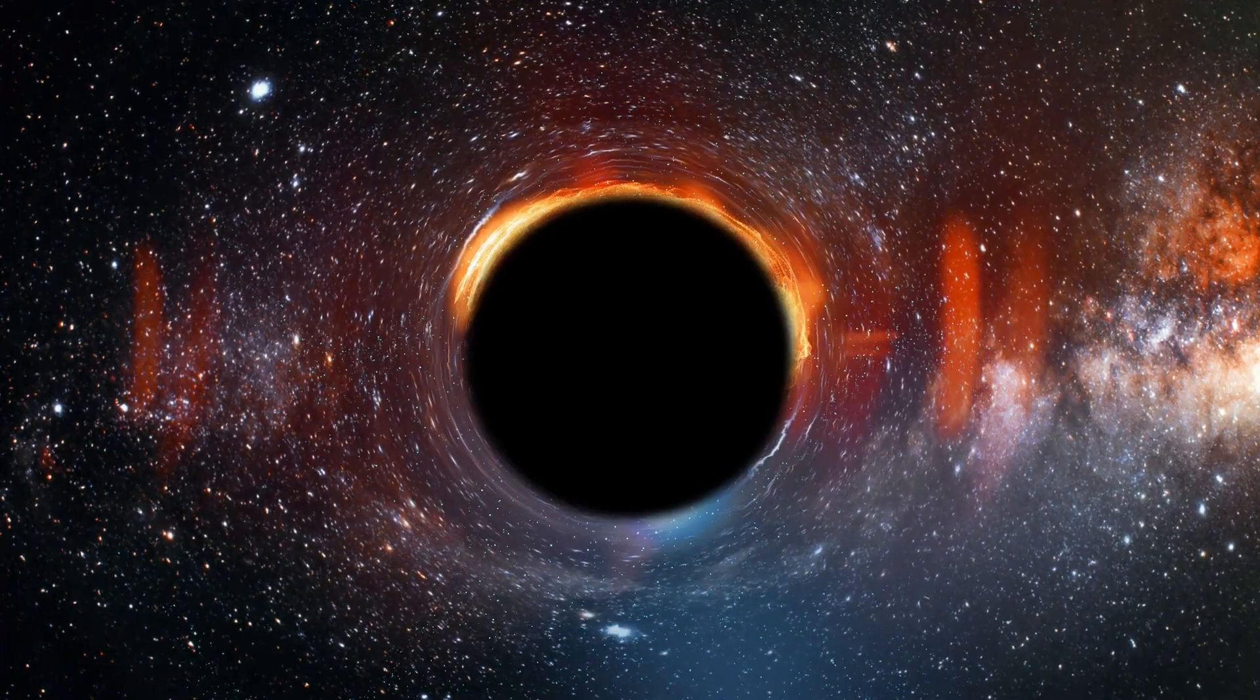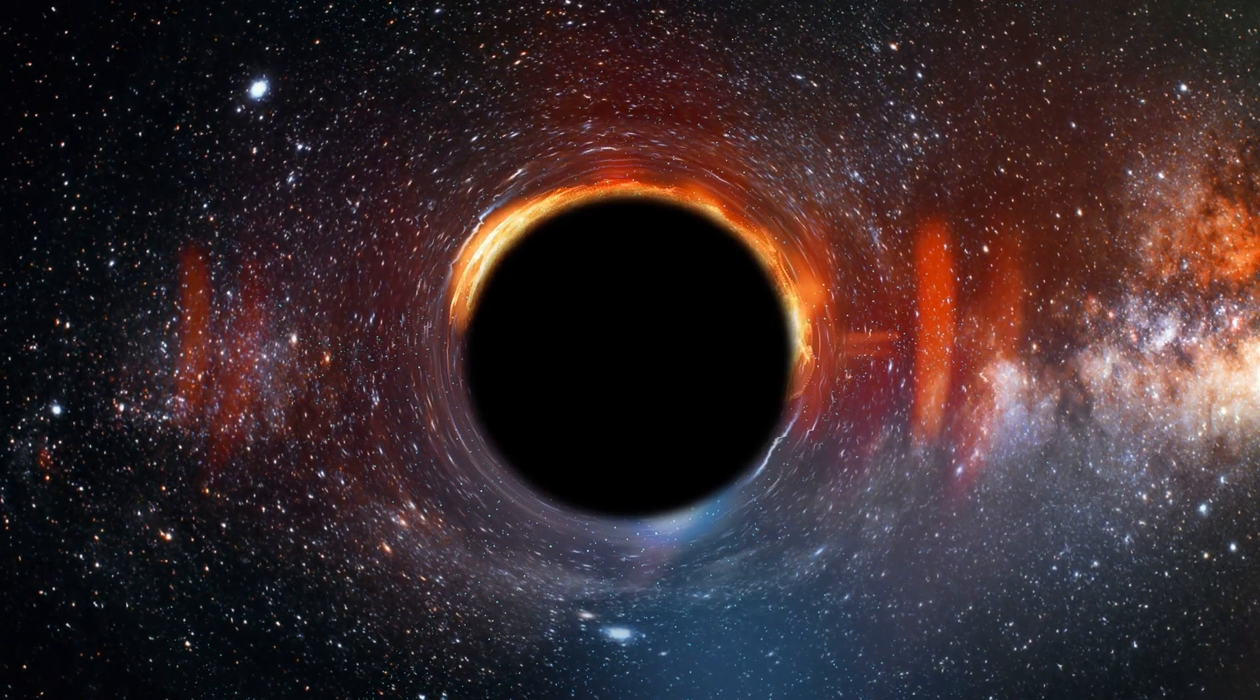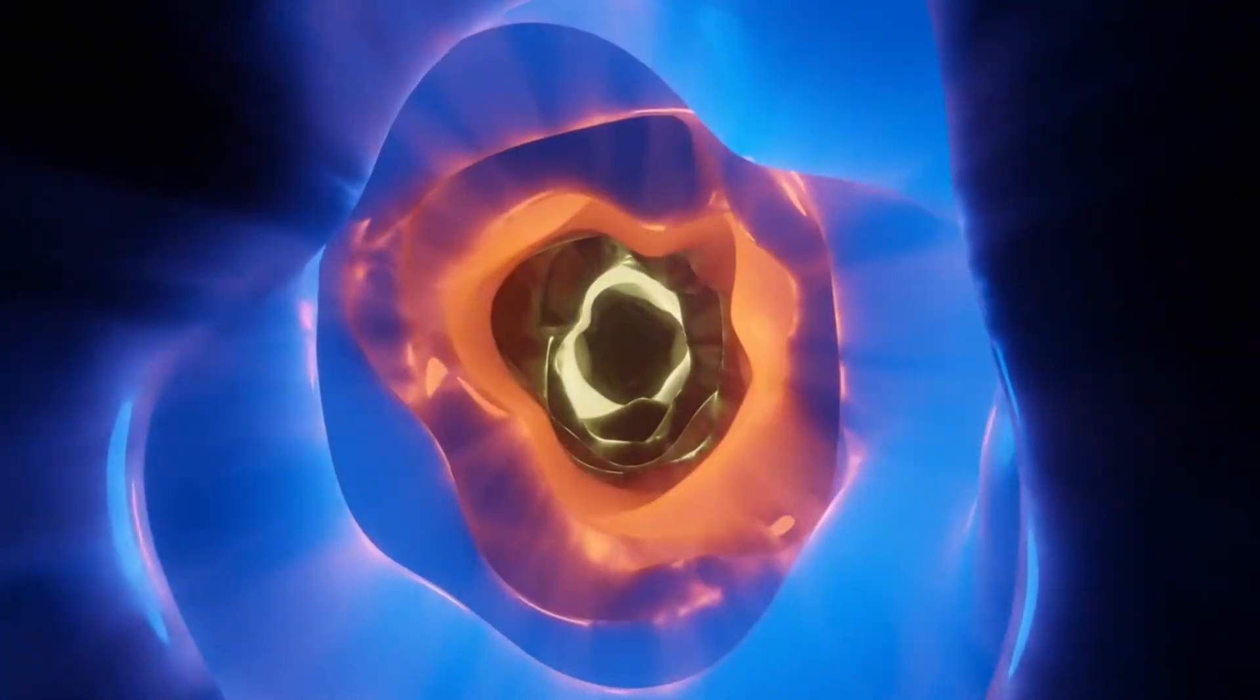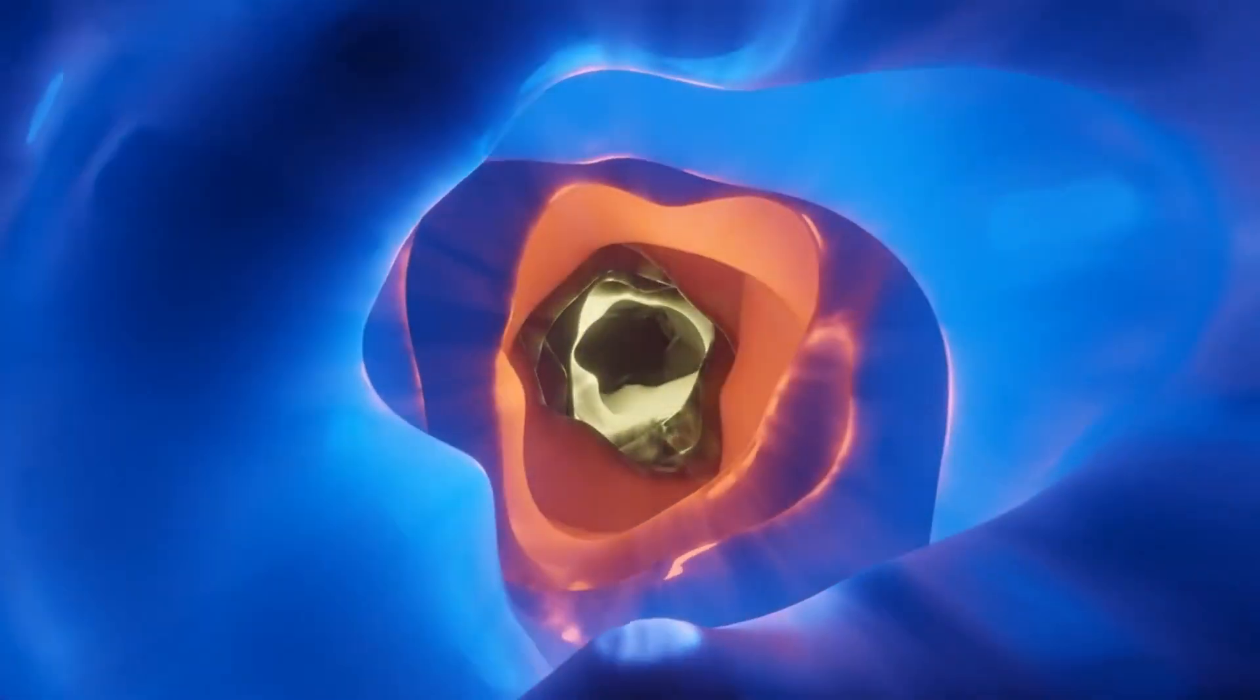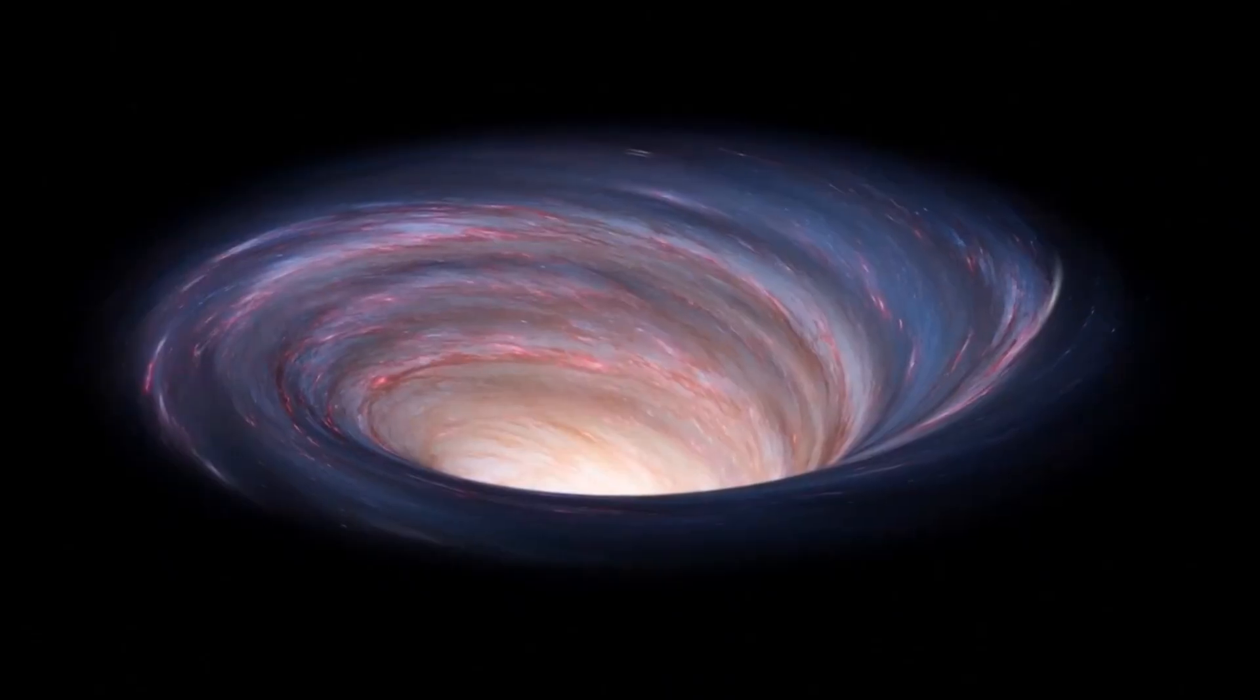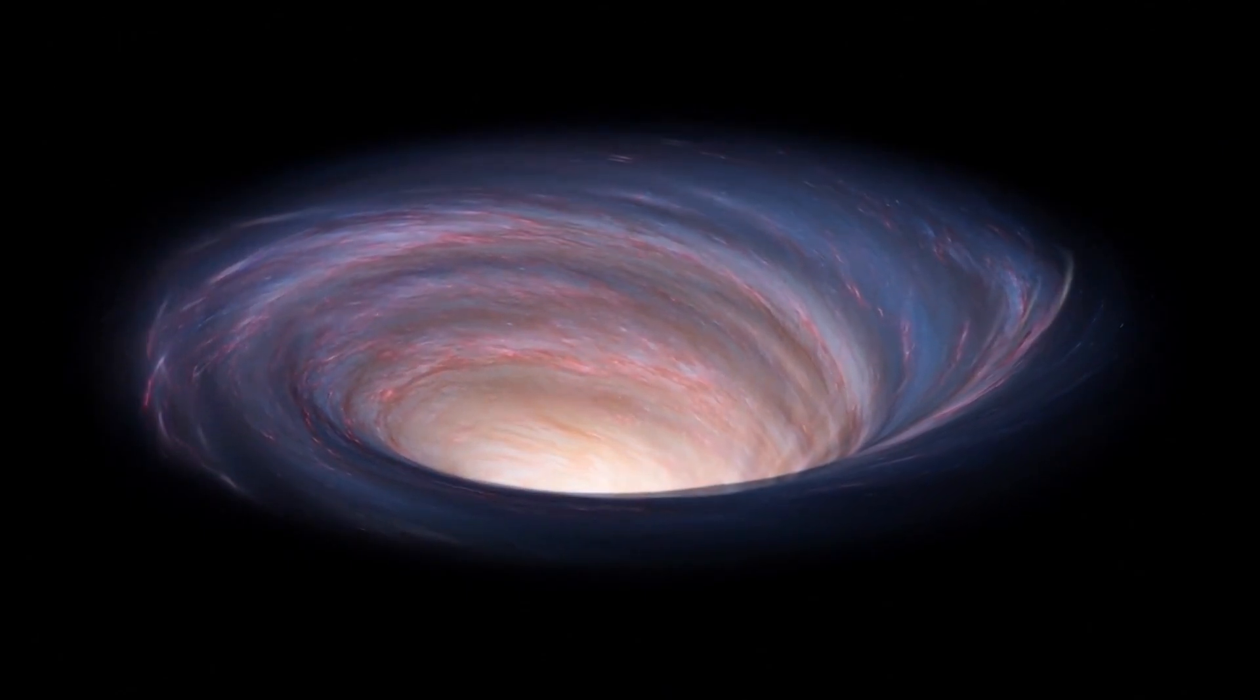Intermediate-mass black holes have masses ranging from thousands to tens of thousands of times that of the Sun, influencing their surroundings and galactic evolution. Supermassive black holes, often found at the center of galaxies, remain an area of active research. One hypothesis suggests they evolve from smaller black holes through accretion, where matter accumulates around a black hole, merging over time to form a supermassive object.